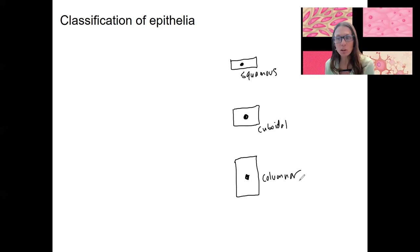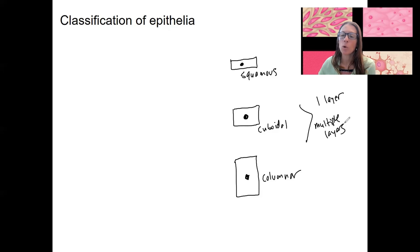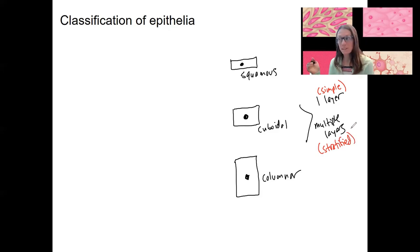For each one of these cell shapes, you could have either a single layer or multiple layers. One layer is called simple, and multiple layers is called stratified. Try to make sense of the words.